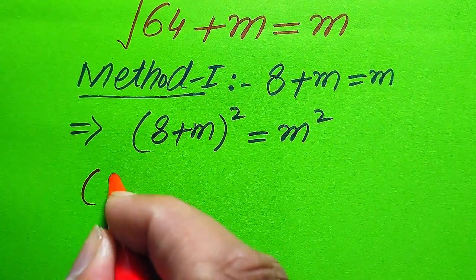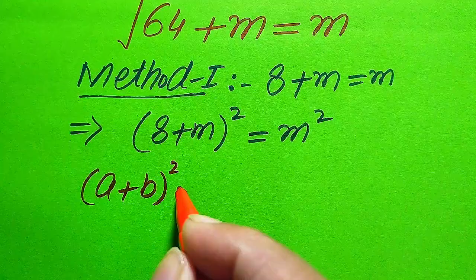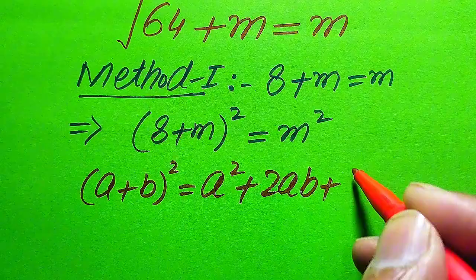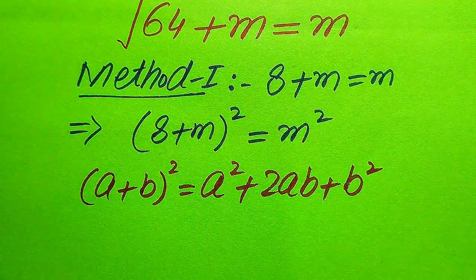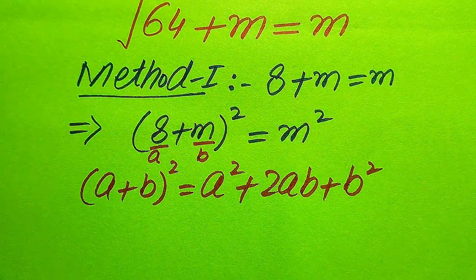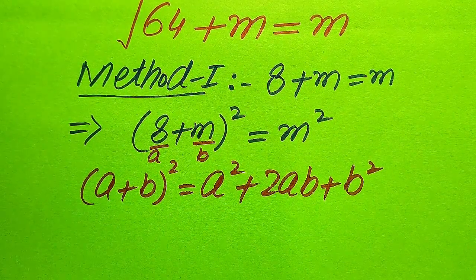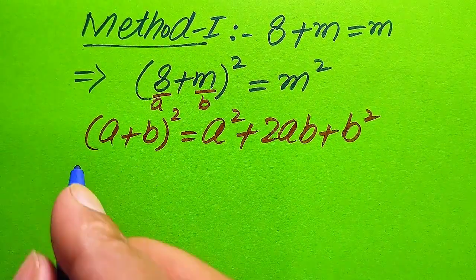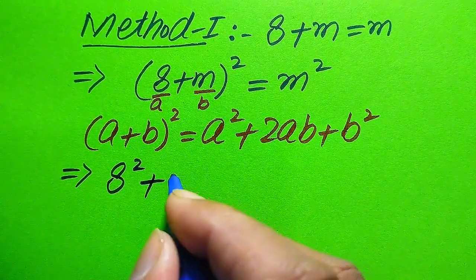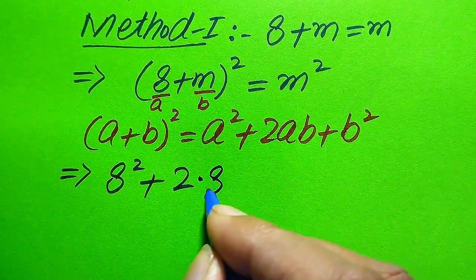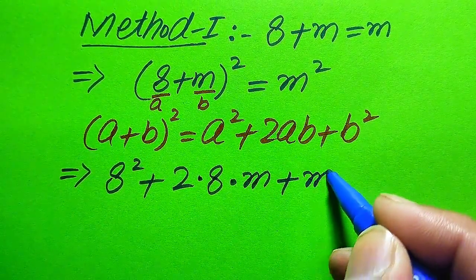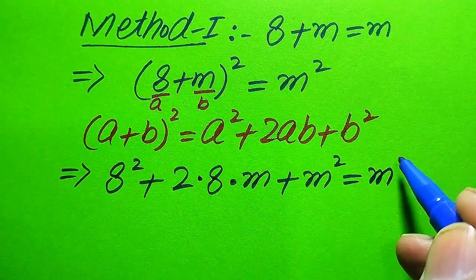In the next step we use the algebraic formula: (a + b)² = a² + 2ab + b². Here a is 8 and b is m. So according to this formula, we expand the left-hand side of the equation as 8² plus 2 times 8 times m plus m², which equals m².